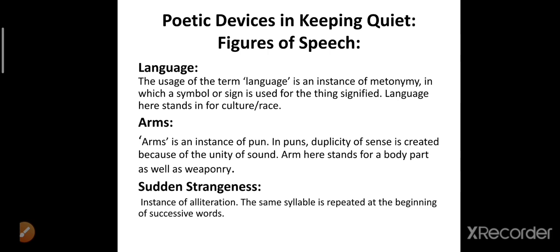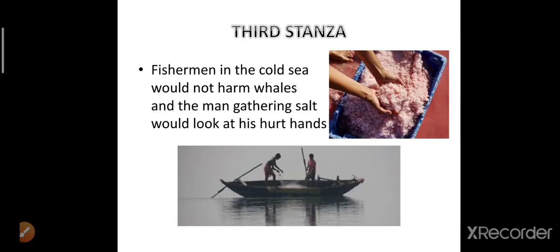And 'sudden strangeness' — I have already told you about this. The repetition of the syllable S in 'sudden strangeness' is an instance of alliteration. Now let us proceed towards the third stanza.